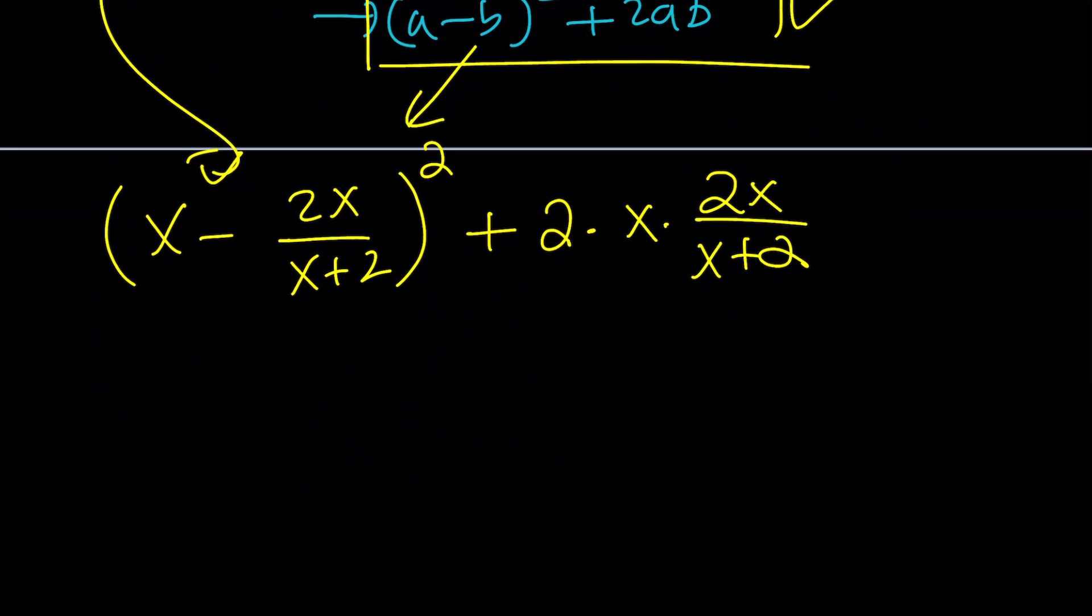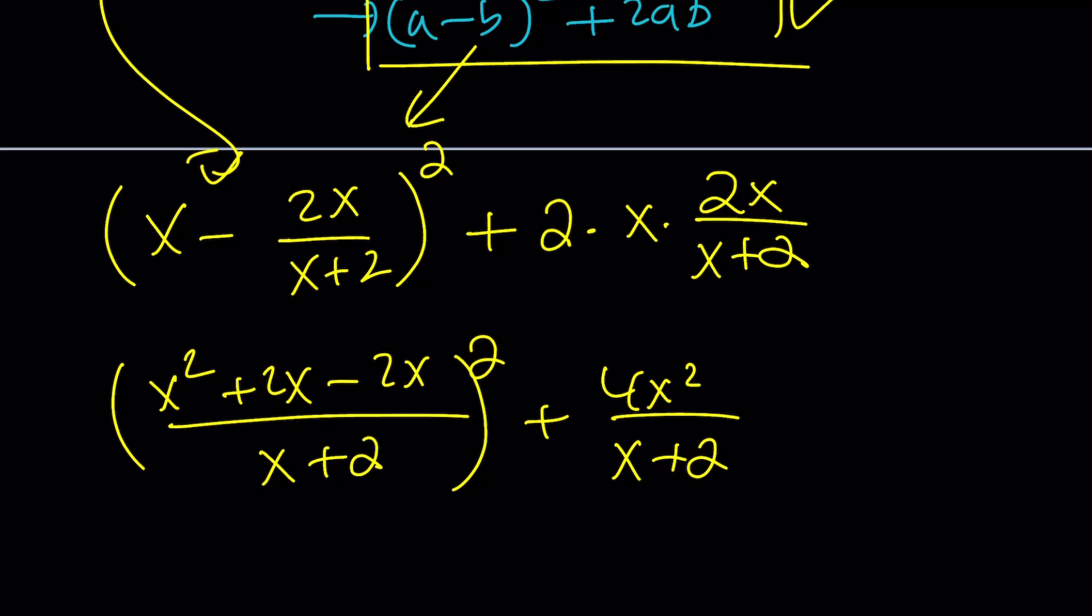Make sense? Now, notice that when you make a common denominator, you get (x²+2x-2x)². This is why it's better to use the minus version. And this becomes 4x²/(x+2). And of course, the whole thing is equal to 5.